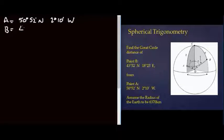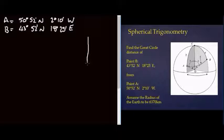So we'll just continue to write down point B. So that is 43 degrees, 52 minutes north and 18 degrees, 25 minutes east.